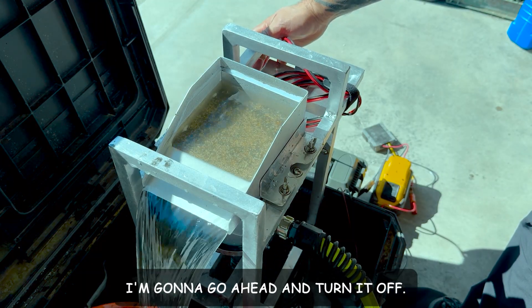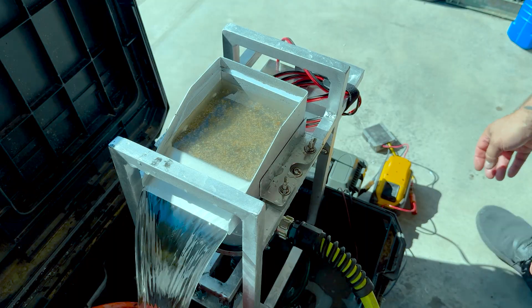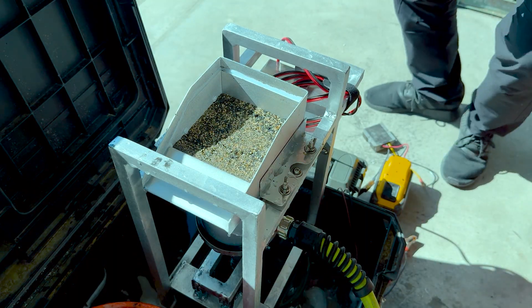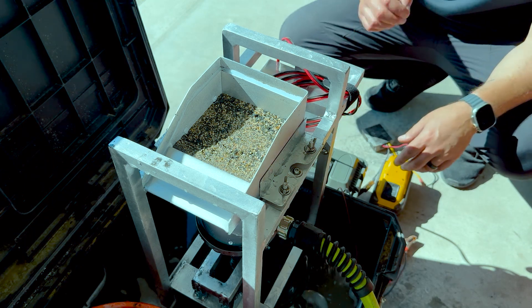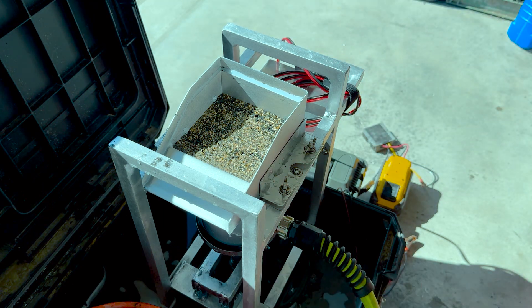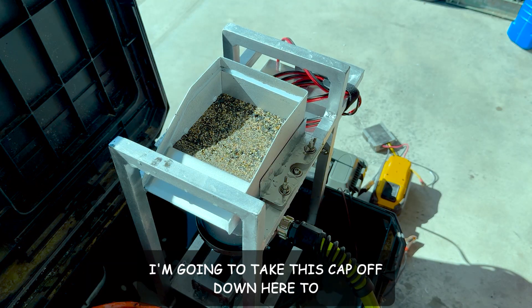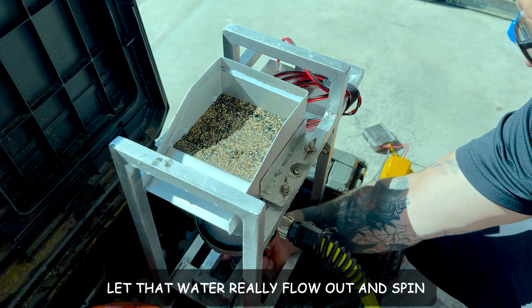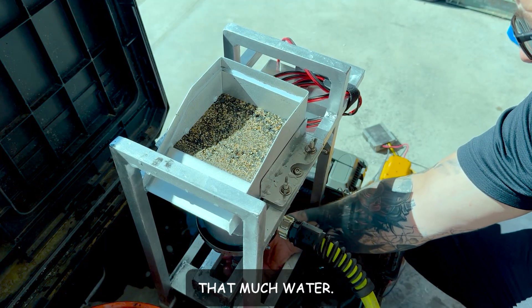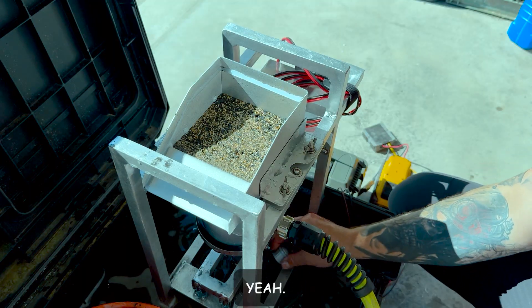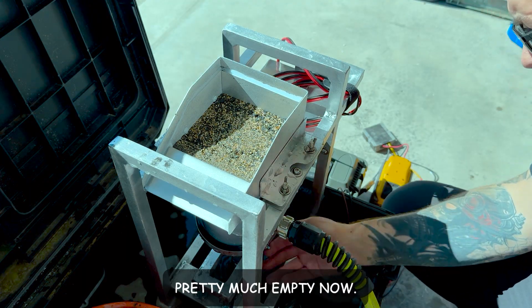I'm going to go ahead and turn it off. And turn off the pump. And get a spray nozzle on this hose. I'm going to take this cap off down here to let that water really flow out and spin that hutch water. That should really get it going. It's empty now.